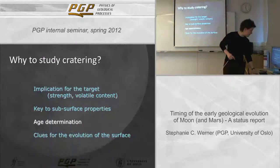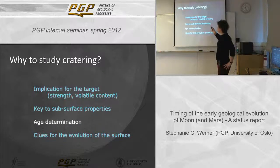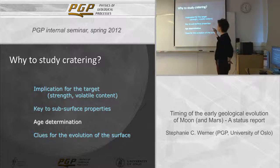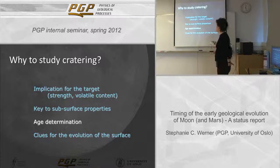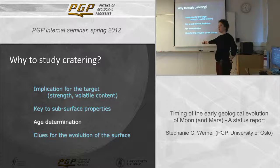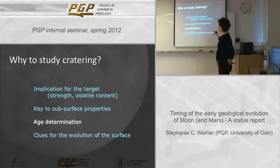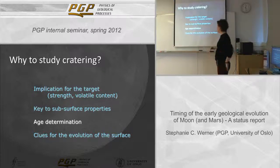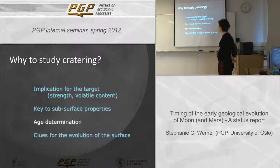There are several reasons to study impact cratering. By understanding target properties on Earth, you can infer strength and rheological information about other planetary bodies, assuming you understand the cratering process itself. You can also identify subsurface properties, since material is excavated from depth into the ejecta blanket — spectral study can reveal layering or buried material. Most importantly for this talk: age determination. If you know the age of a morphological feature, you can understand surface evolution and infer thermal evolution of the body.